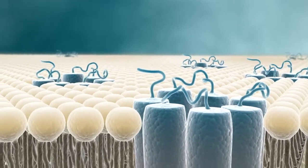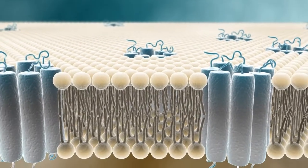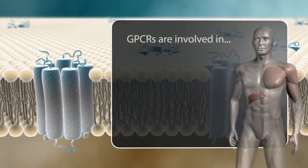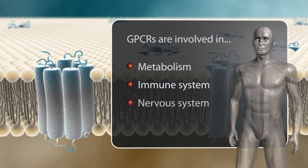One very important group of related proteins, called G-protein-coupled receptors, or GPCRs, is involved in many essential processes, including metabolism, immune response, and brain function.